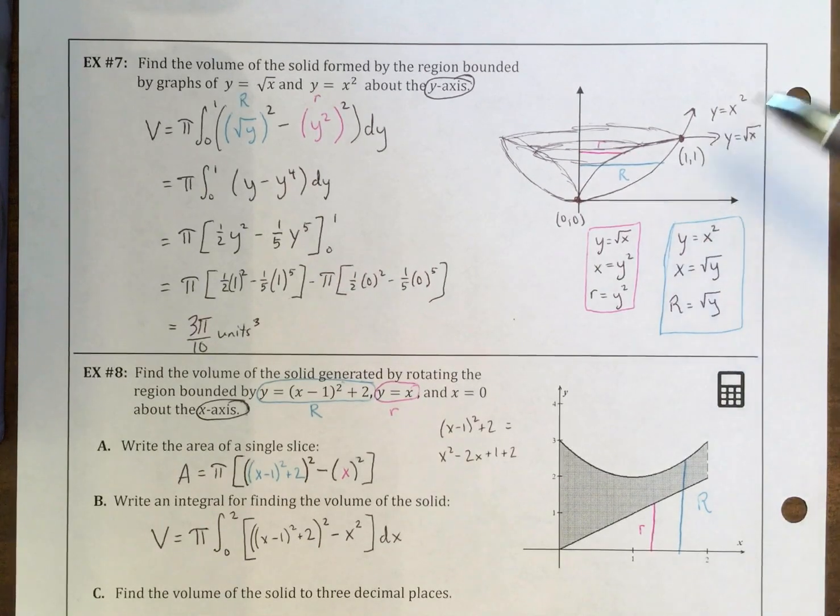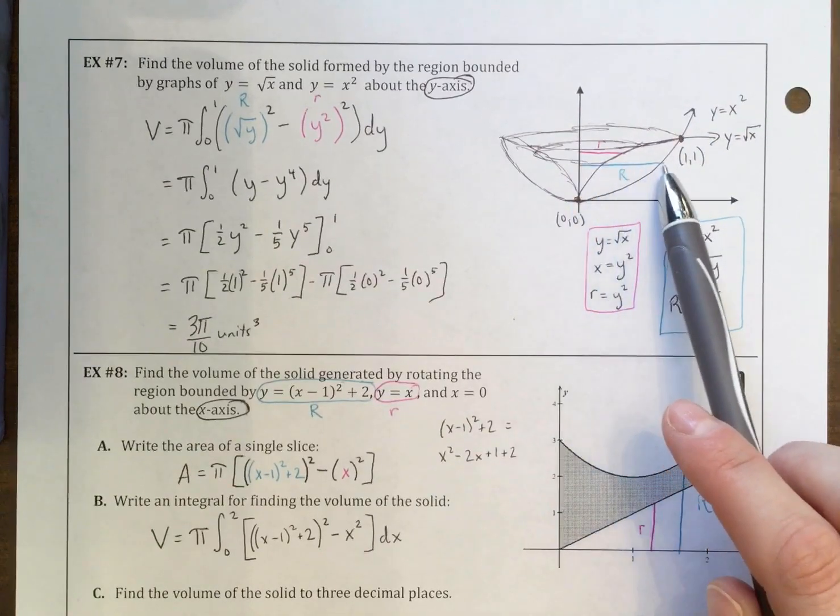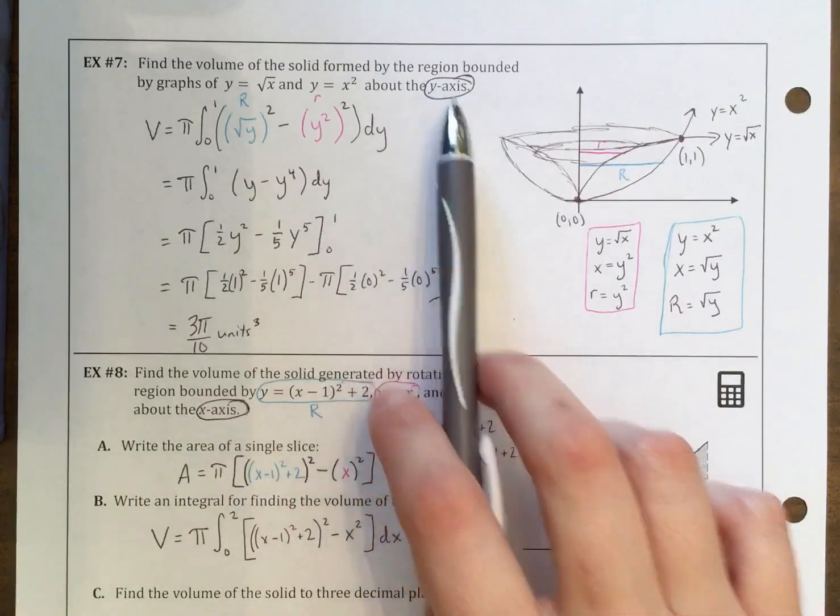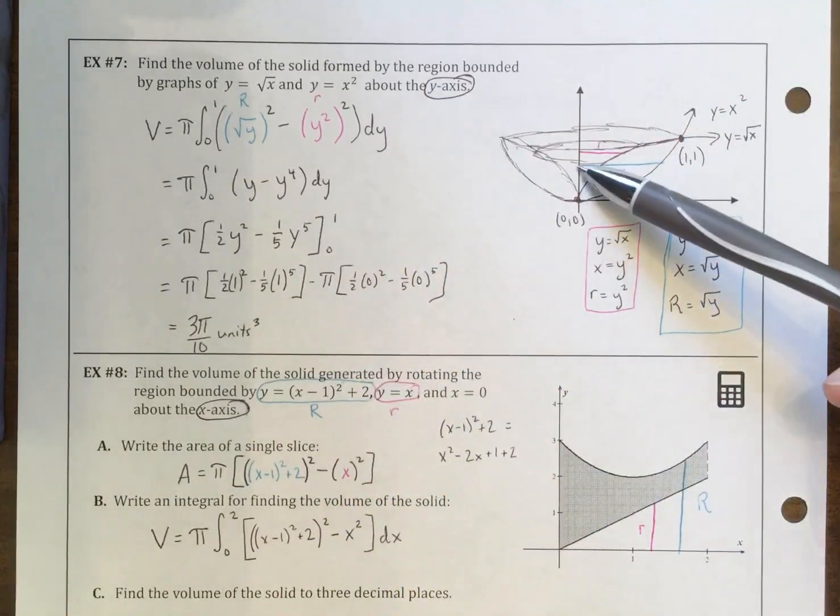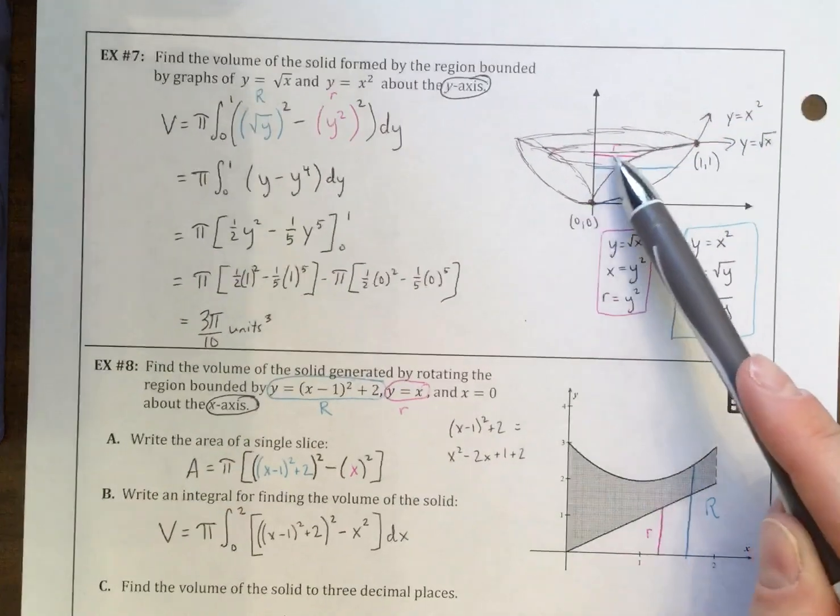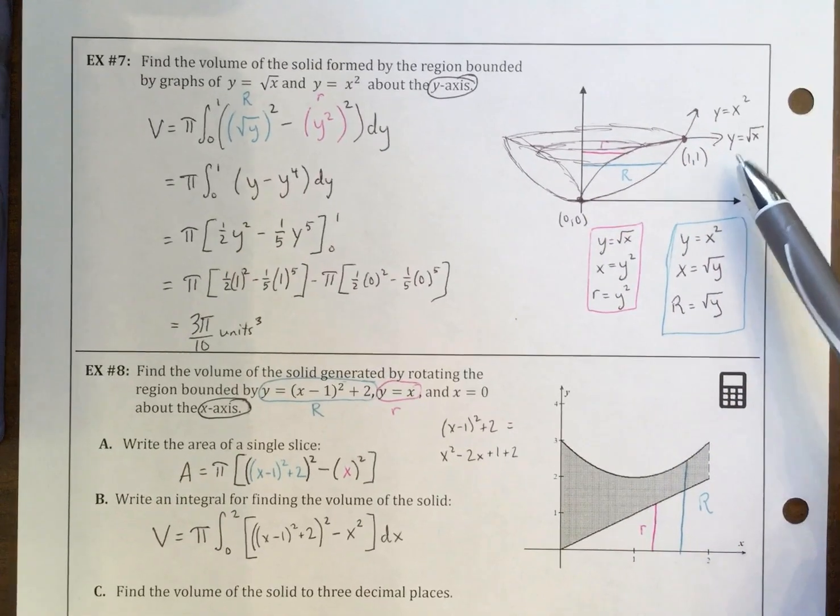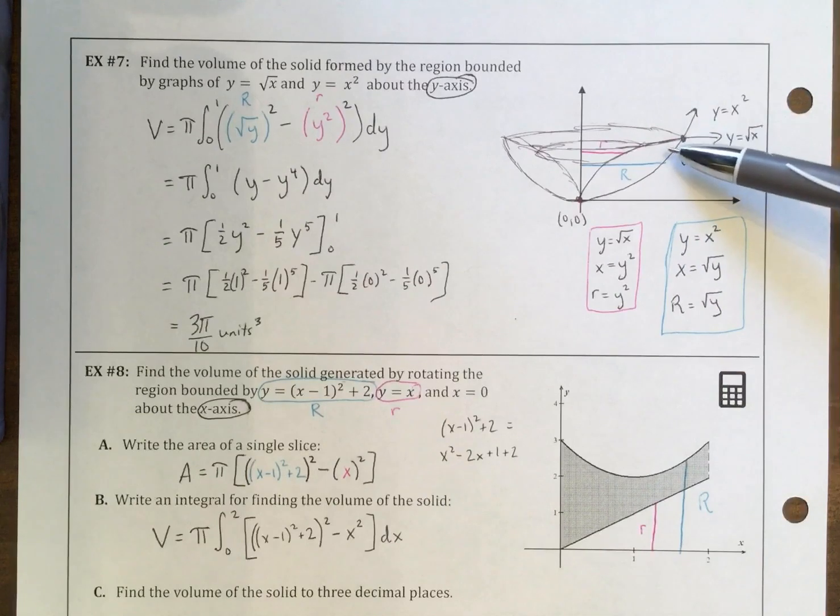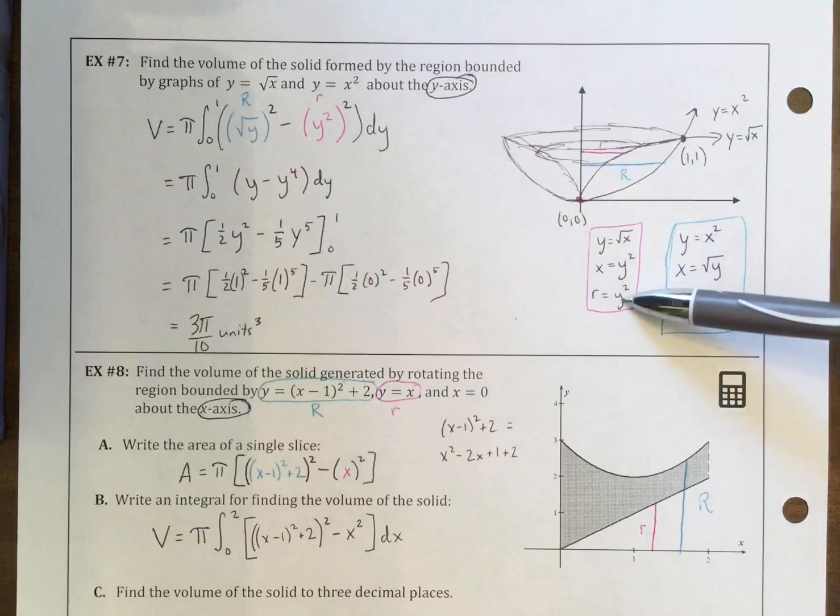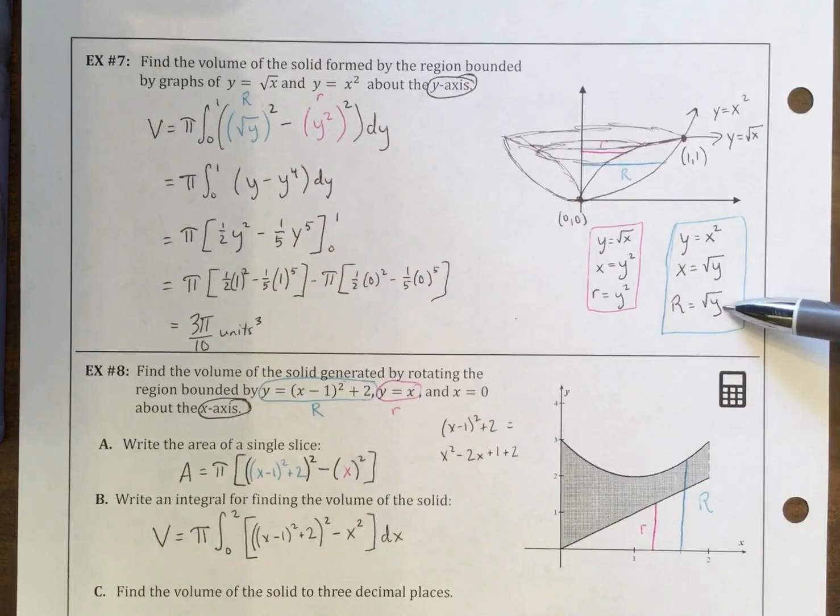So the first one, you want to find big R. Big R is going out to the function that's farther away because this time we are doing this about the y-axis. So big R is going out here to the parabola, x squared. Little r, the smaller radius, is coming out here to square root of x. We need to make sure we put these in terms of y because we're rotating them about the y-axis. So we make sure to solve these for y. So for the one we get y squared, and for the other one we get square root of y.